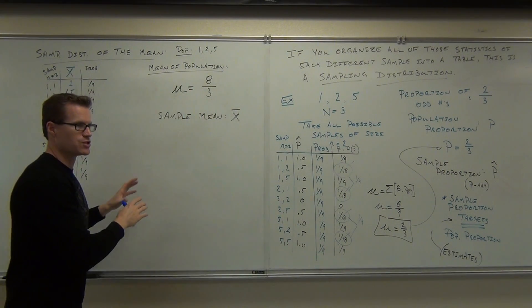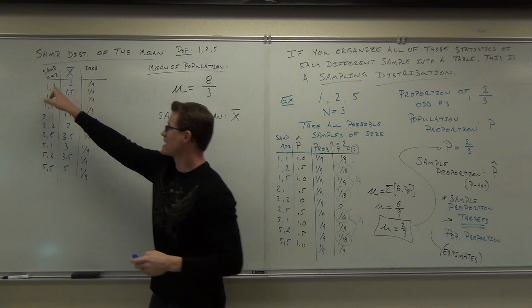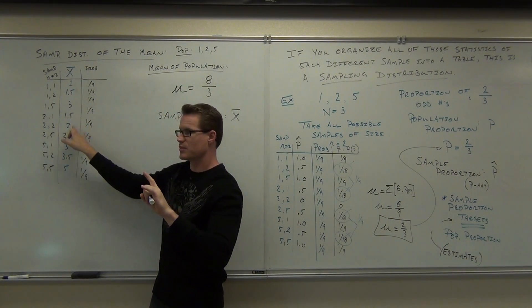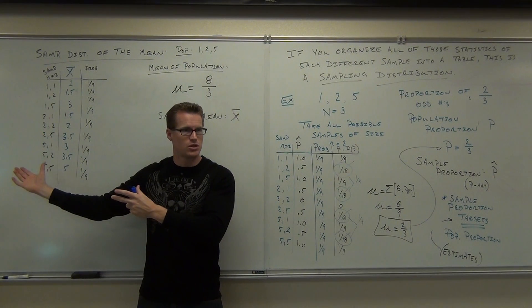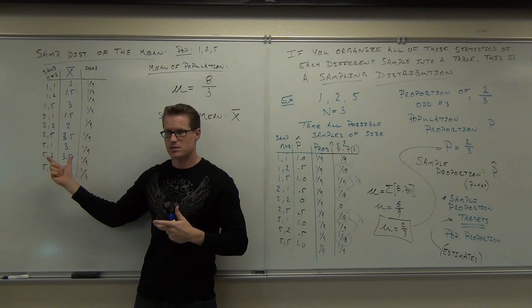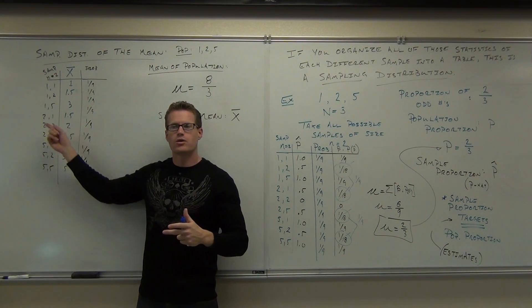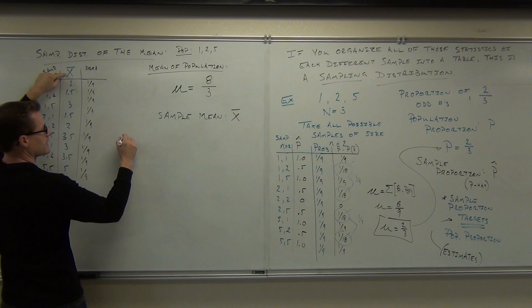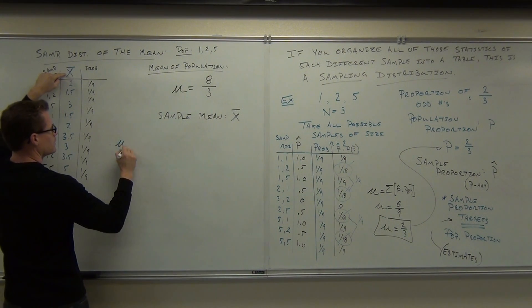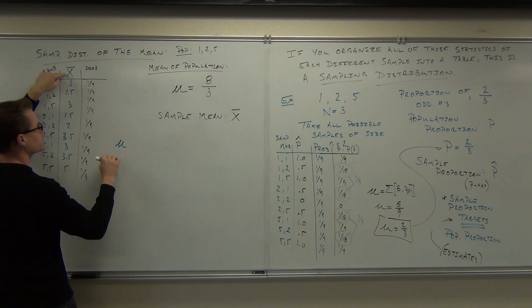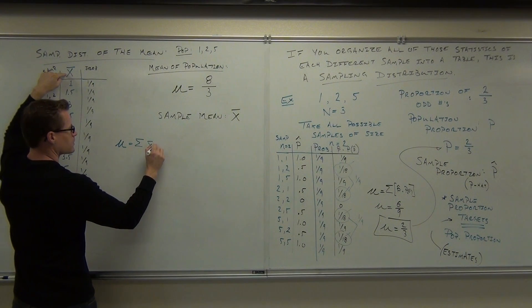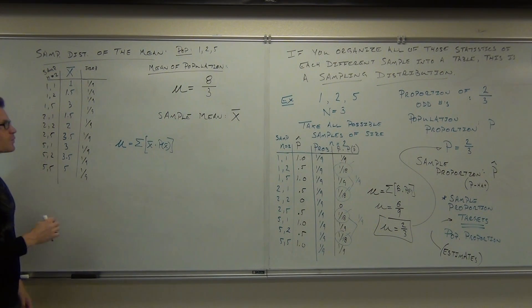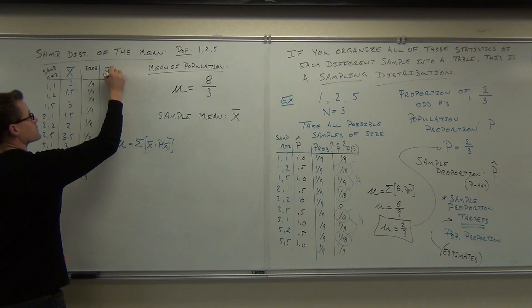We're going to go ahead and average these averages. Do you agree this is every possible different sample of size two? We found the mean of every different possible sample size two. We've put it in a table. This is a sampling distribution. It's a distribution of all the sample means. We're now going to average these means, average the averages.